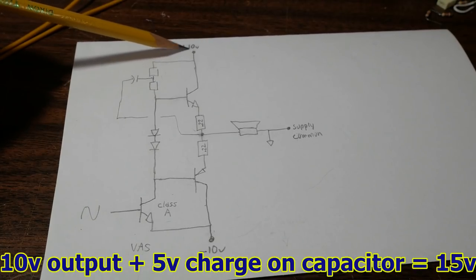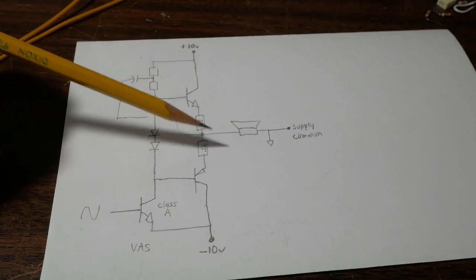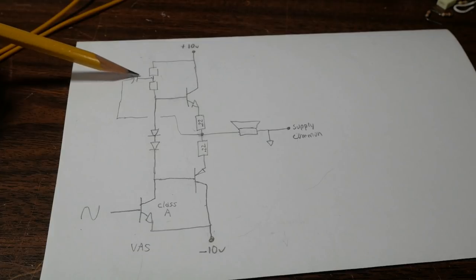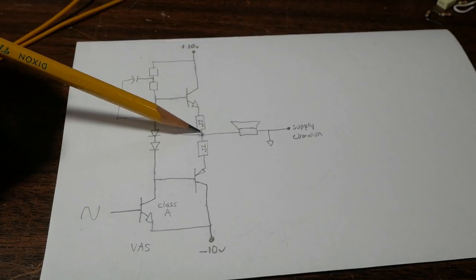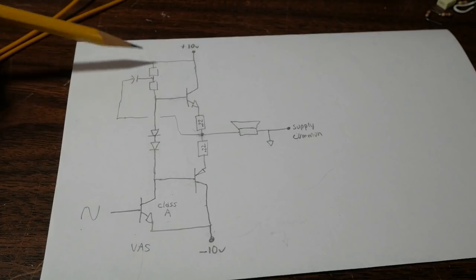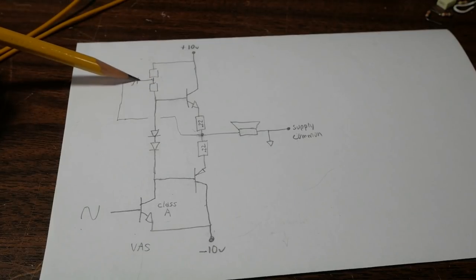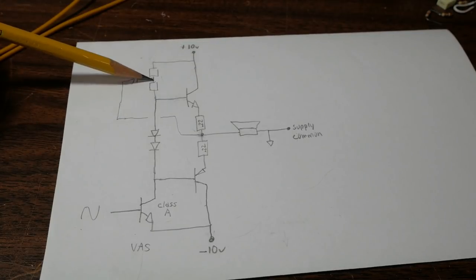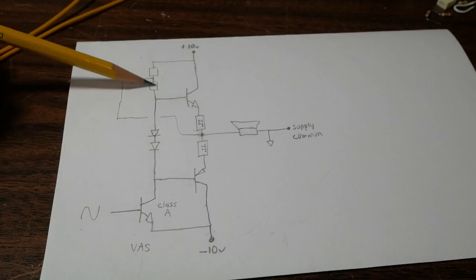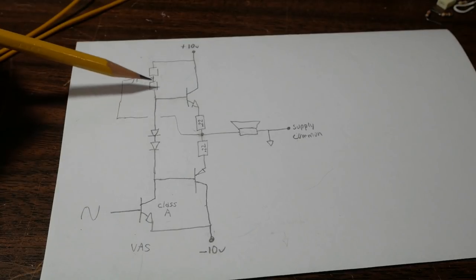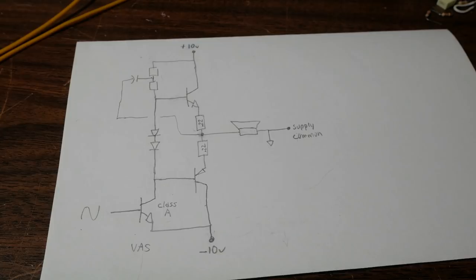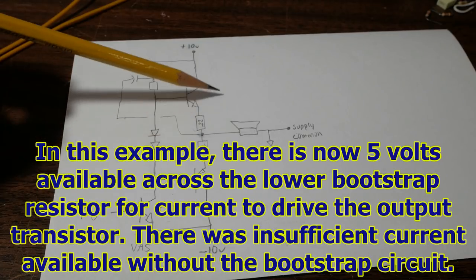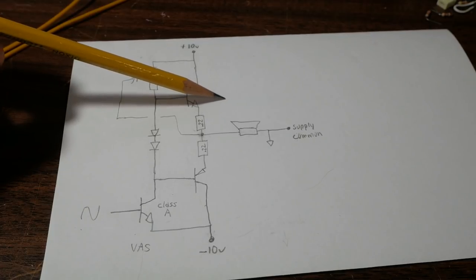And that's because of the additive effect of this output voltage plus the charge voltage on the capacitor. So with 10 volts here, 15 volts here, you have a difference of 5 volts. So with the output at the maximum positive voltage swing, we have 5 volts here that will conduct through this resistor. That means we have plenty of current to drive this transistor with.